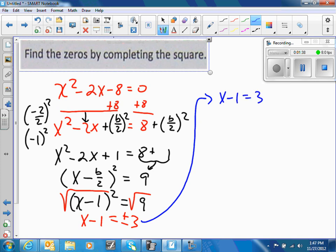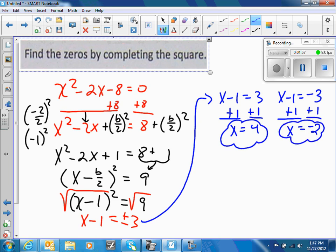So we're going to add 1 to both sides and x is equal to 4. Add 1 to both sides and x is equal to negative 2. Now remember 4 and negative 2 is exactly what I got previously. So you can go back and double check, 4 and negative 2.